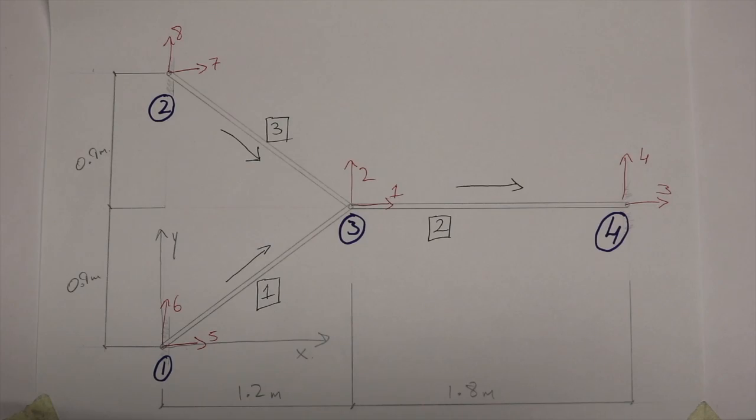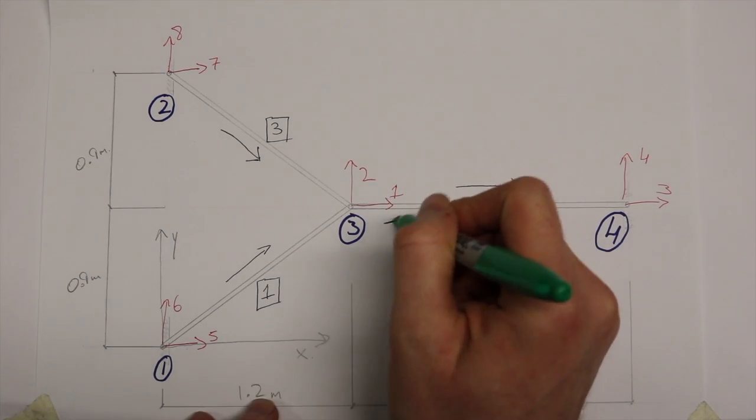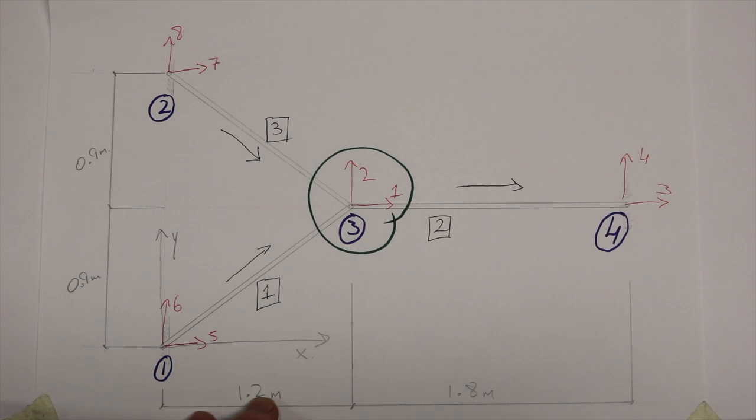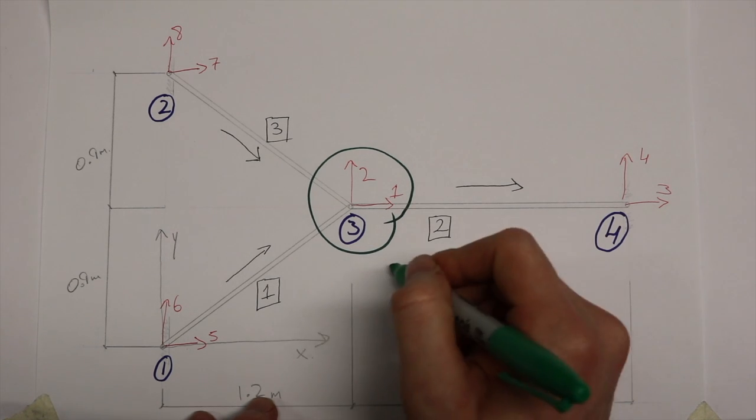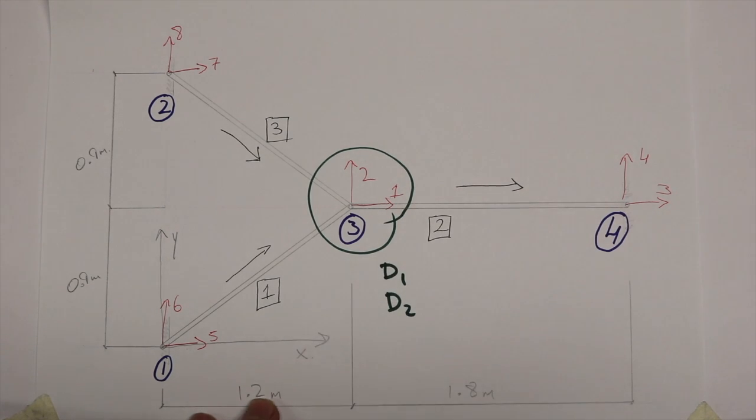Now that we have our structure stiffness matrix, we can begin to go about calculating our unknown displacements. We only have two unknown displacements in this structure and they are both at node 3. We will label these d1 and d2.